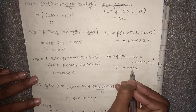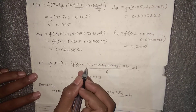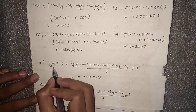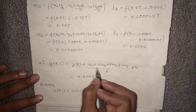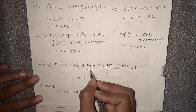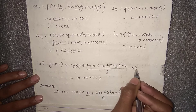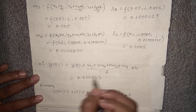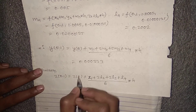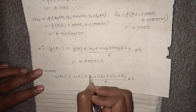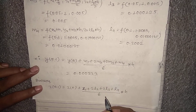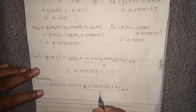Finally, y(0.1) = y(0) + (m1 + 2·m2 + 2·m3 + m4)·h/6. Substituting y(0) = 1 and the computed slopes with h = 0.1, we get the change equal to 0.000333. Similarly, z(0.1) = z(0) + (l1 + 2·l2 + 2·l3 + l4)·h/6, substituting the l values gives the required z(0.1).